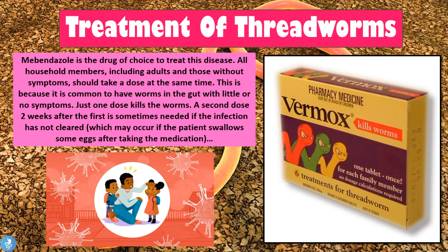Finally, let's talk about the treatment of the threadworm infection. Mebendazole is the drug of choice to treat this disease. All household members, including adults and those without symptoms, should take a dose at the same time, because it is common to have worms in the gut with little or no symptoms. Just one dose will kill the worms. A second dose two weeks after the first is sometimes needed if the infection has not cleared, which may occur if the patient swallows some eggs after taking the first dose. The most common drug on the market is Vermox, whose active ingredient is mebendazole — an anti-parasitic agent which works to kill all the worms within the GI tract.